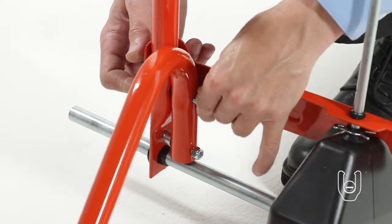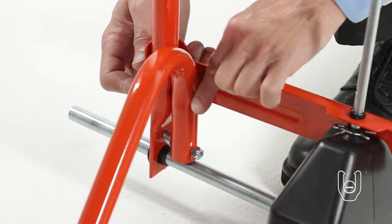And 1/4-inch nylock nuts, Part K. Make sure to leave it a little bit loose for now.